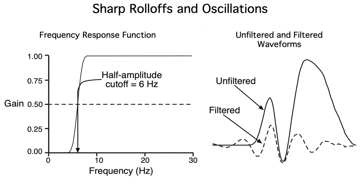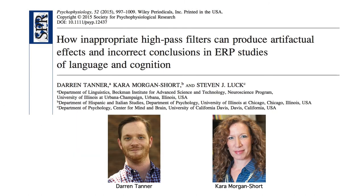Here's what happens if we use a frequency response function with a very steep slope: it actually induces artificial oscillations in the data. If you'd like to see how excessive filtering can lead to bogus effects and completely incorrect conclusions in real data, take a look at this paper that I wrote with two participants from the ERP Bootcamp, Darren Tanner and Kara Morgan Short.